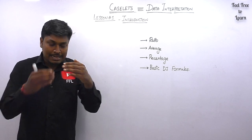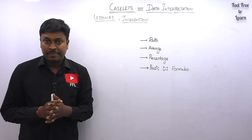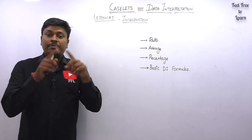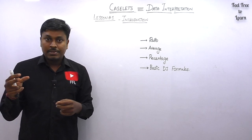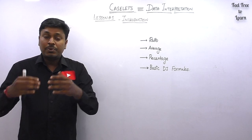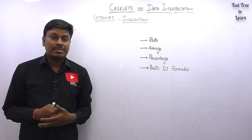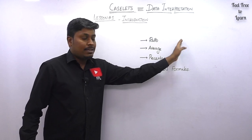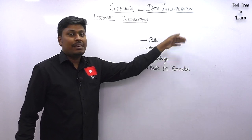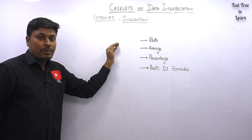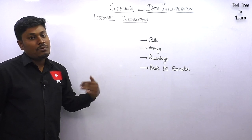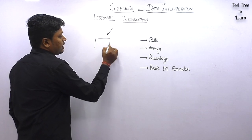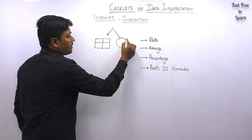In the caselet topic, they won't give you any chart. Instead, they give one or two passages, and under that passage you will have five questions. Your task is to read the passage, frame a table chart or a Venn diagram on your own, and then solve the five questions. That is the difference between caselet and DI.